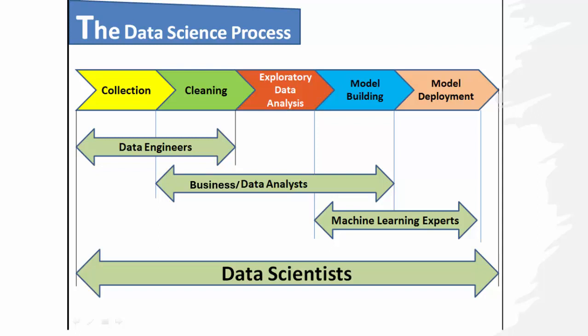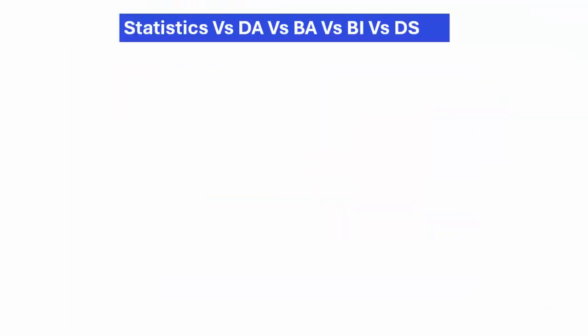Now we see what is statistics, what is data analytics, what is business analytics, what is BI analytics, and what is data science. You want to understand all these things one by one, because at the core of data science there is statistics and mathematics. So first we understand what statistics basically is.